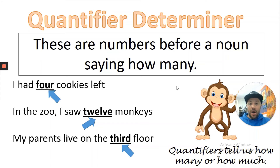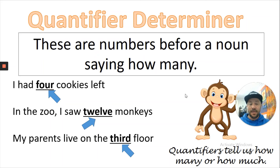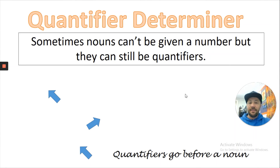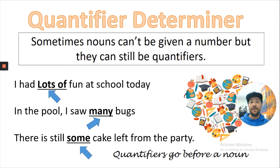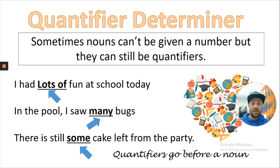Quantifiers tell us how much or how many and go before the noun. But you can also use them when nouns can't be given a specific number — they can still be quantifiers. For example: 'I had lots of fun at school today', 'in the pool I saw many bugs', and 'there is still some cake left from the party'. So 'lots of', 'many', and 'some' are all quantifier determiners — they still go before the noun and give you the amount.